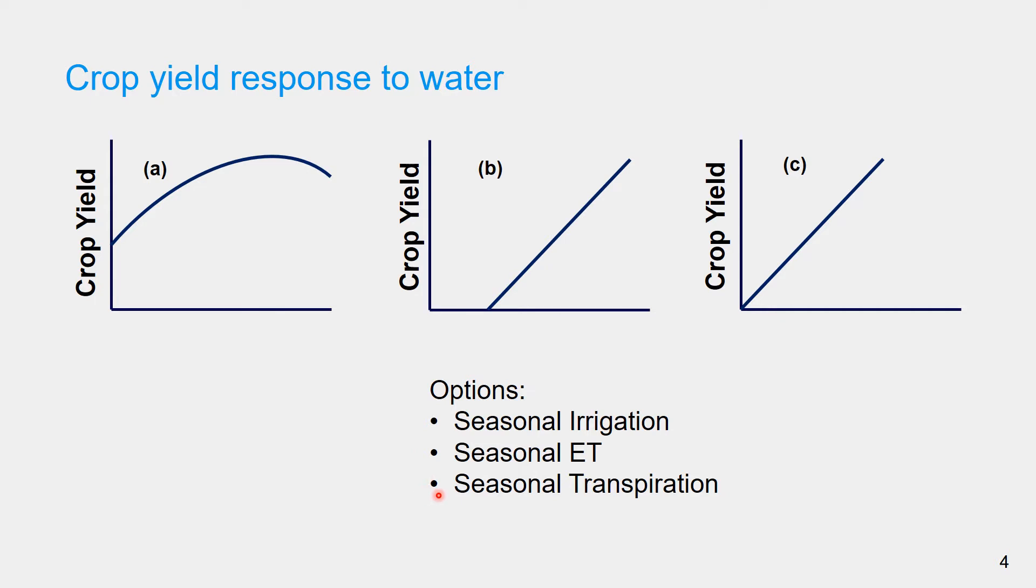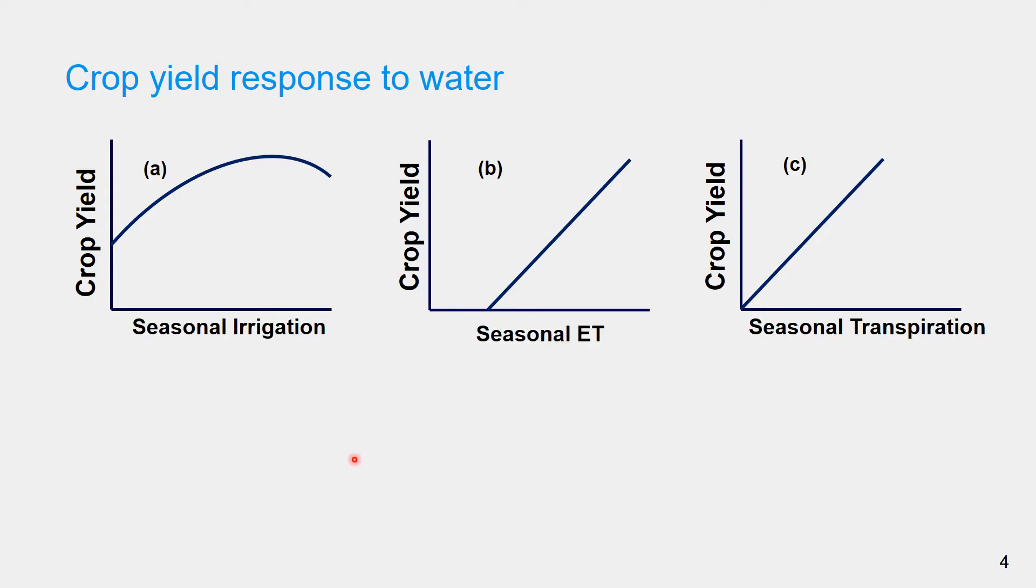On the left is the graph of crop yield versus seasonal irrigation. It crosses the y-axis at a positive value which corresponds to crop yield in rainfed agriculture. This yield increases with the amount of seasonal irrigation and starts declining after a certain amount which is due to soil aeration problem or so-called aeration stresses.